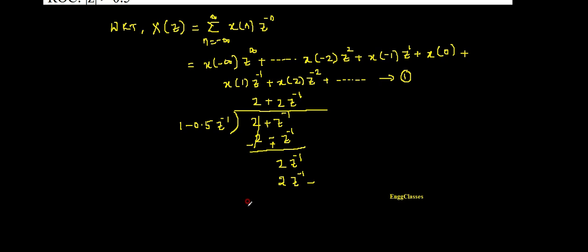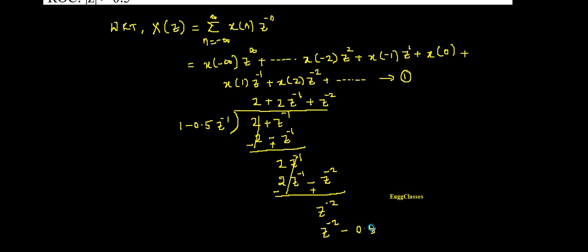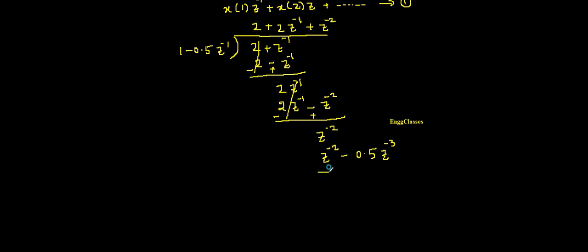Subtracting: 2z⁻¹ - 2z⁻¹ cancels, leaving z⁻². To cancel z⁻², multiply 1 by z⁻², giving z⁻² and -0.5z⁻¹ × z⁻² = -0.5z⁻³. Subtracting: z⁻² - z⁻² cancels, leaving remainder 0.5z⁻³. If we keep going, we continue getting terms in negative powers of z. We stop the division here.